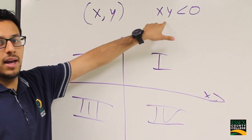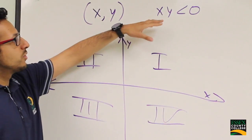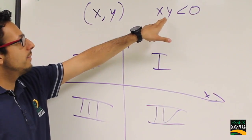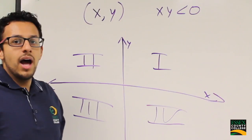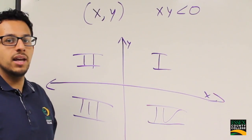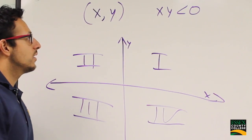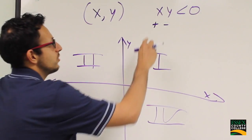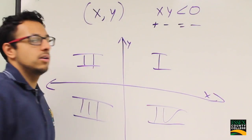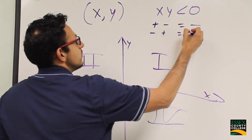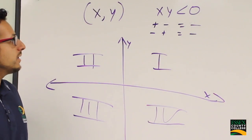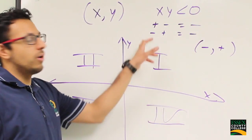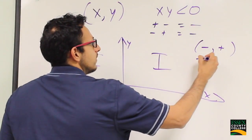First we have to figure out what it means for x times y to be less than 0. Any number less than 0 is negative, so we need to find what times what gives a negative number. Opposite signs give negatives: positive times negative gives negative, or negative times positive gives negative. So x can be positive while y is negative, or x can be negative while y is positive.